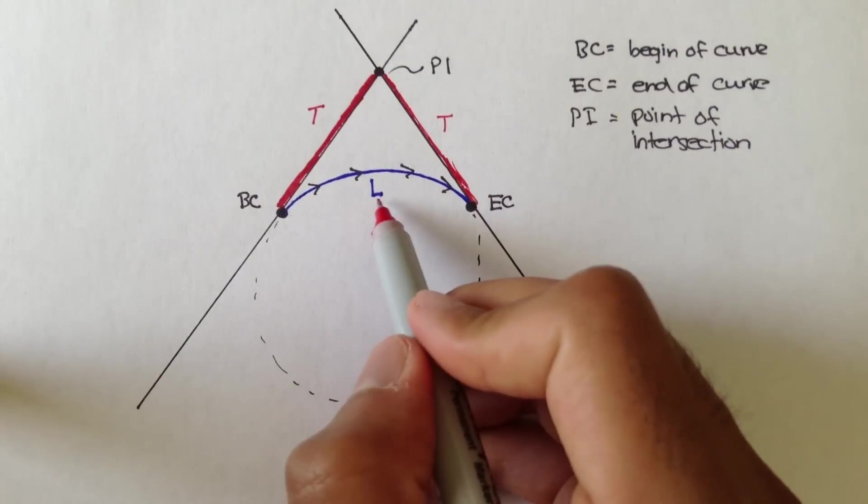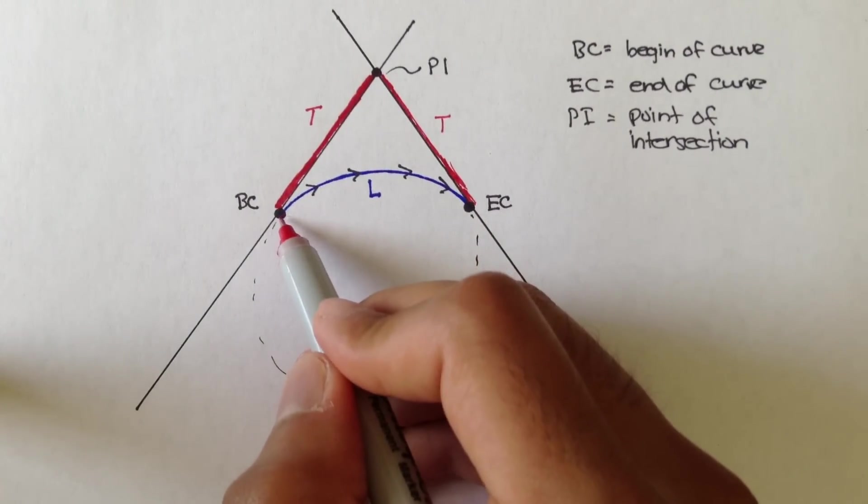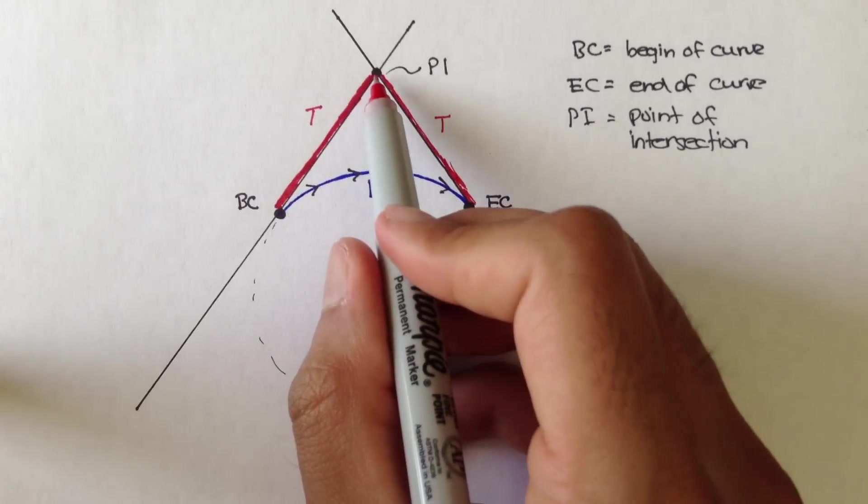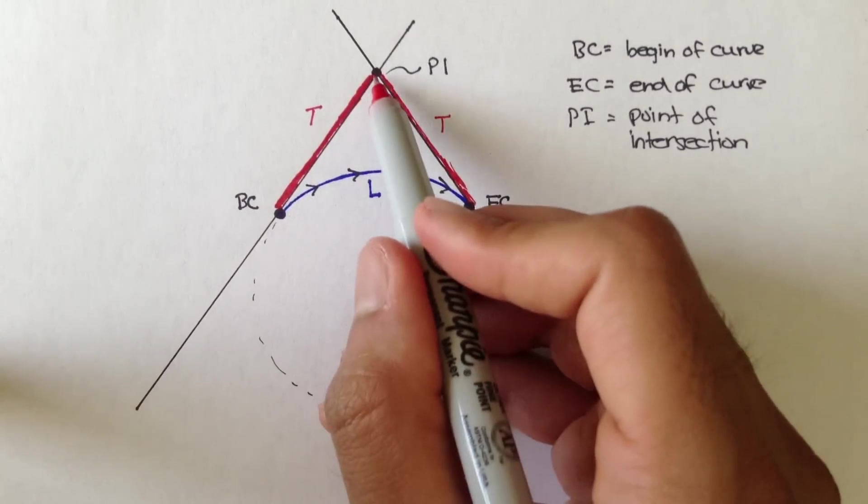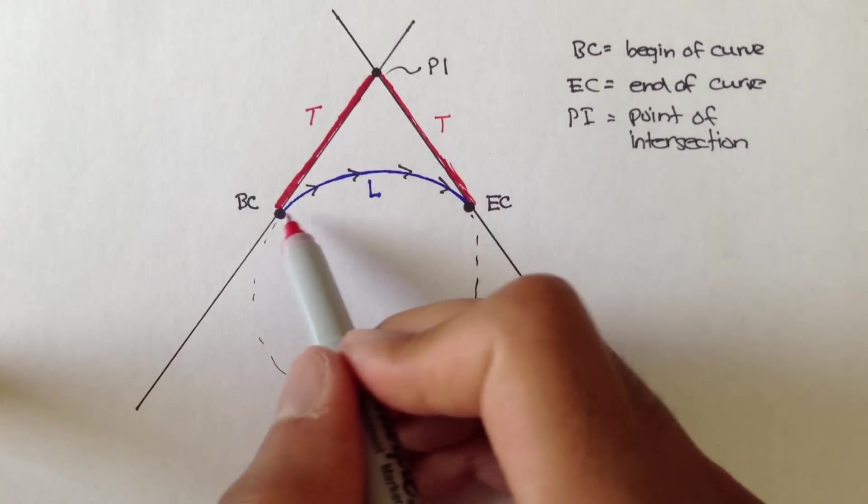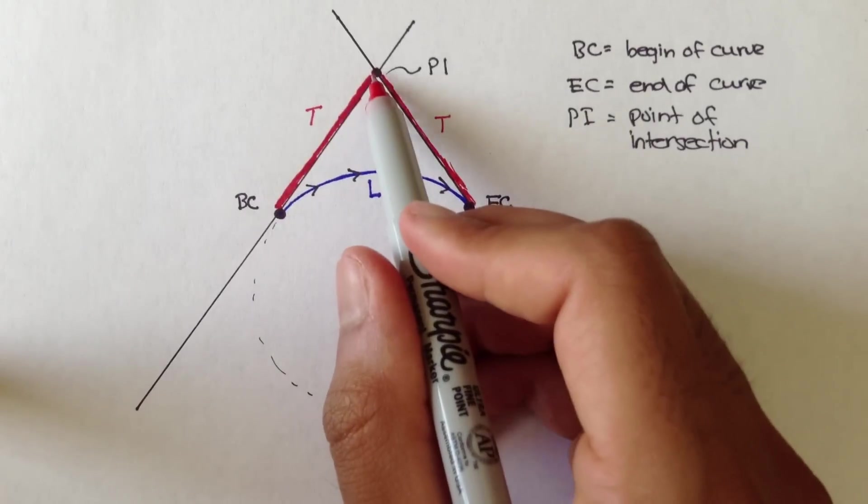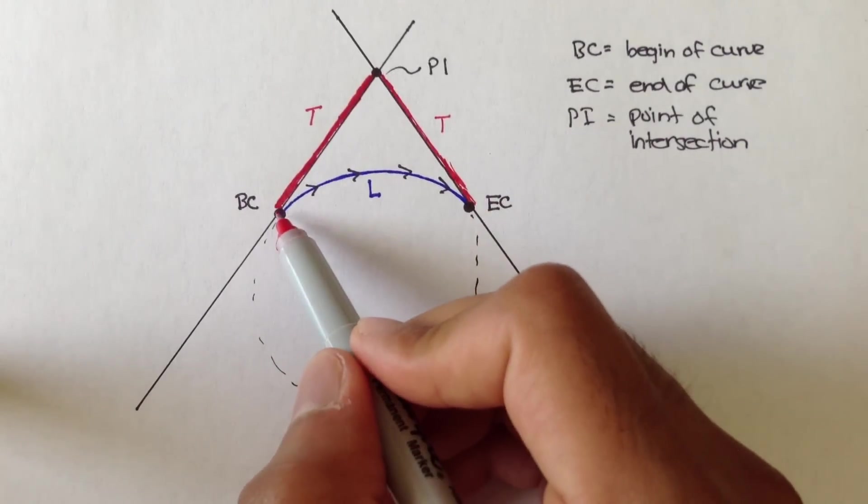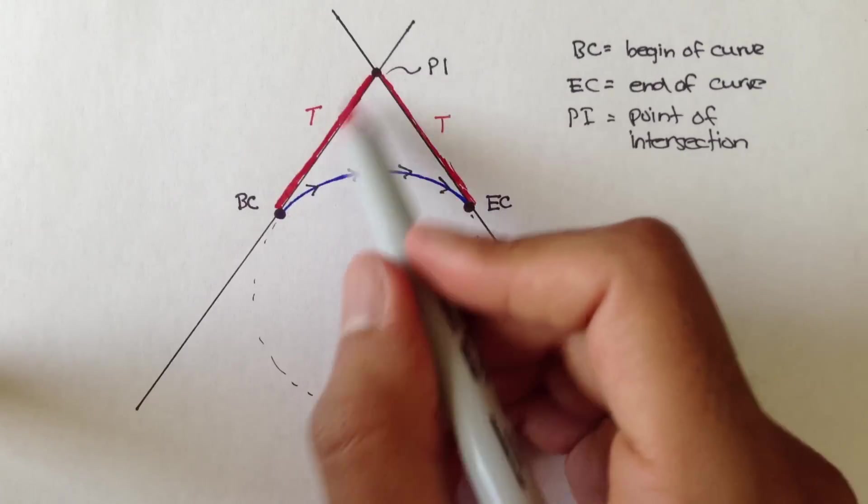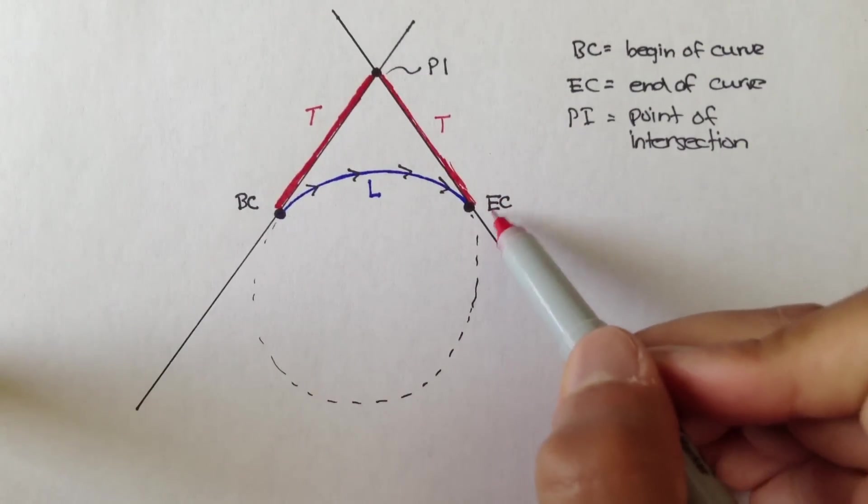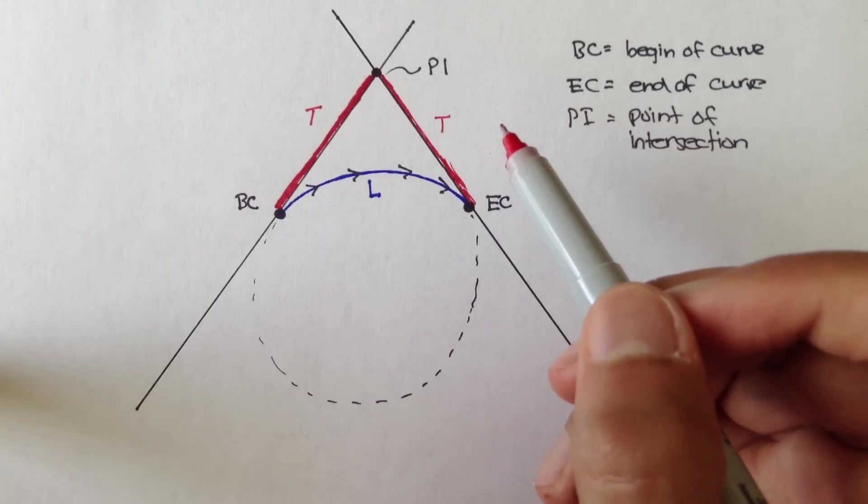So we have L, which stands for the length of the curve from the BC to the EC. We have the point of intersection, which is the point where these two tangents of the BC and EC intersect. And we have a distance from BC to PI, which is called T, and from EC to PI, which is also called T.